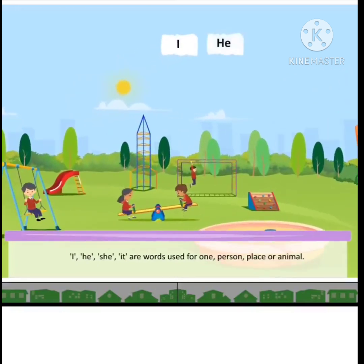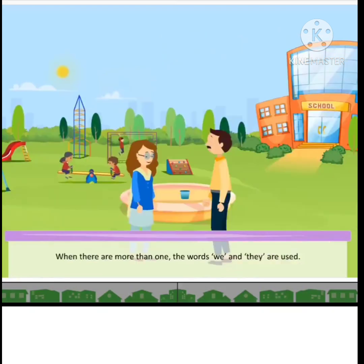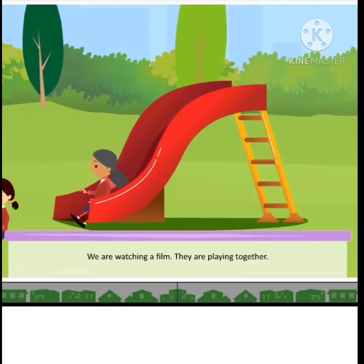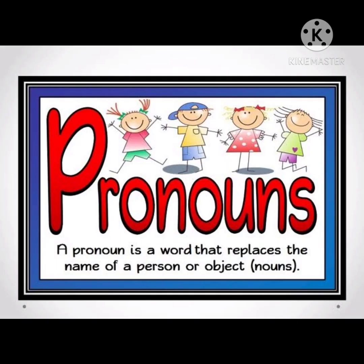I, he, she, it are words used for one person, place, animal or thing. When there are more than one, the words 'we' and 'they' are used. We are watching a film. They are playing together. We use 'you' when we talk to someone else. Children, you watched about pronouns. A pronoun is a word that replaces the name of a person, animal or thing. The words which we use in the place of naming words are called pronouns.